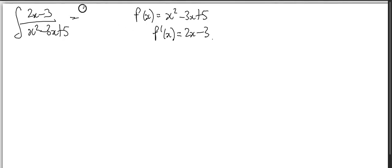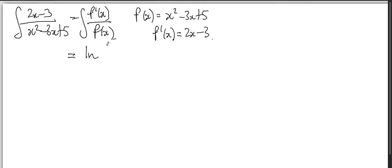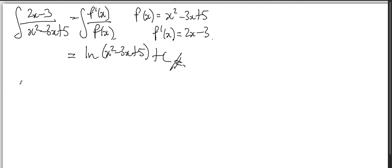Since the numerator matches f'(x), therefore the answer is ln(x² - 3x + 5) + c. Now for one last question: integrating e to the power of x plus 2e to the power of negative 2x over...